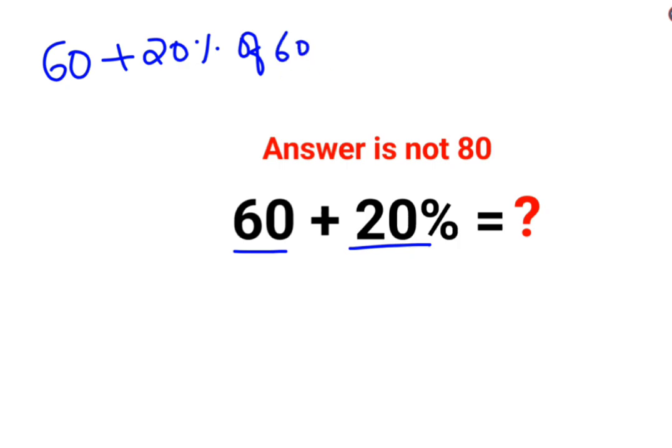So here in this case, we will calculate it this way: 60 plus 20%. Percent can be written in fraction by dividing the number by 100 into 60.